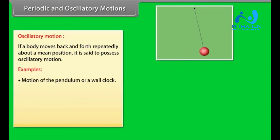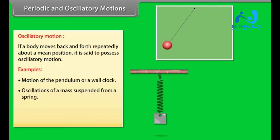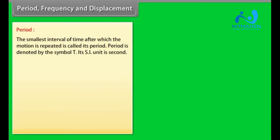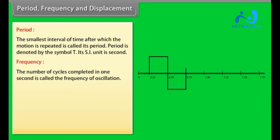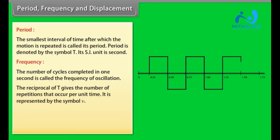Examples of oscillatory motion include: oscillation of a mass suspended from a spring, and motion of a swing. Period: the smallest interval of time after which the motion is repeated is called its period, denoted by the symbol T. Its SI unit is second. Frequency: the number of cycles completed in one second is called the frequency of oscillation. The reciprocal of T gives the number of repetitions per unit time, represented by the symbol V. The relation between V and T is V = 1/T. The unit of V is per second and is called Hertz.